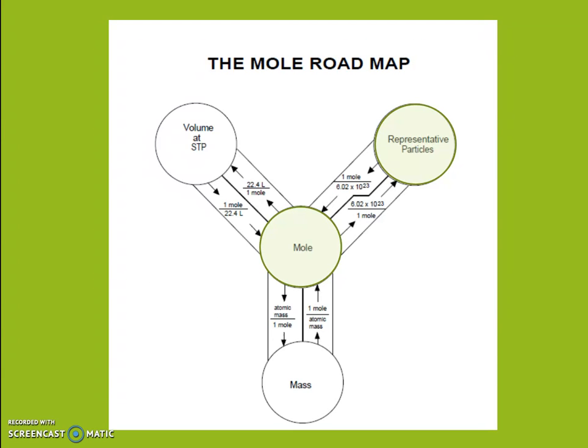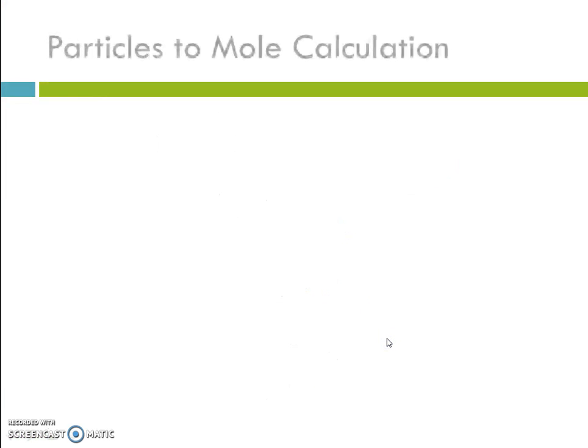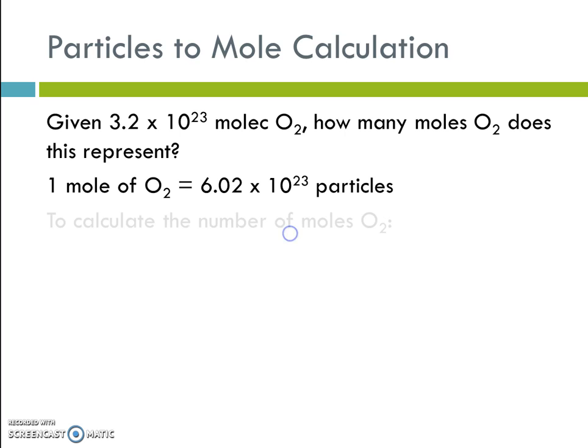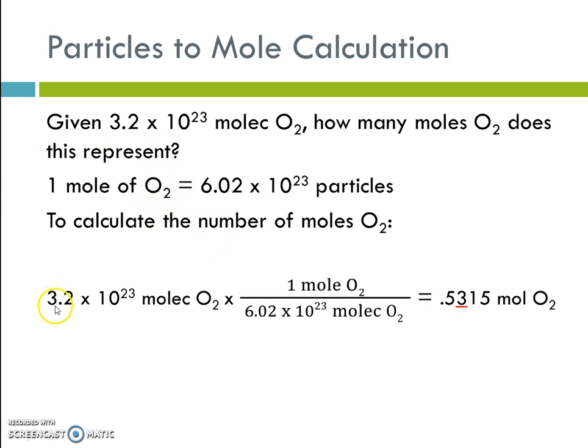So we first went from moles to particles, now we're going to go from particles to moles. Particles to mole calculation. Given 3.2 times 10 to the 23rd molecules of oxygen, how many moles does that represent? Recalling 1 mole again is 6.02 times 10 to the 23rd particles. So in order to calculate the number of moles, we're going to always start with our given. And here our given is 3.2 times 10 to the 23rd molecules.